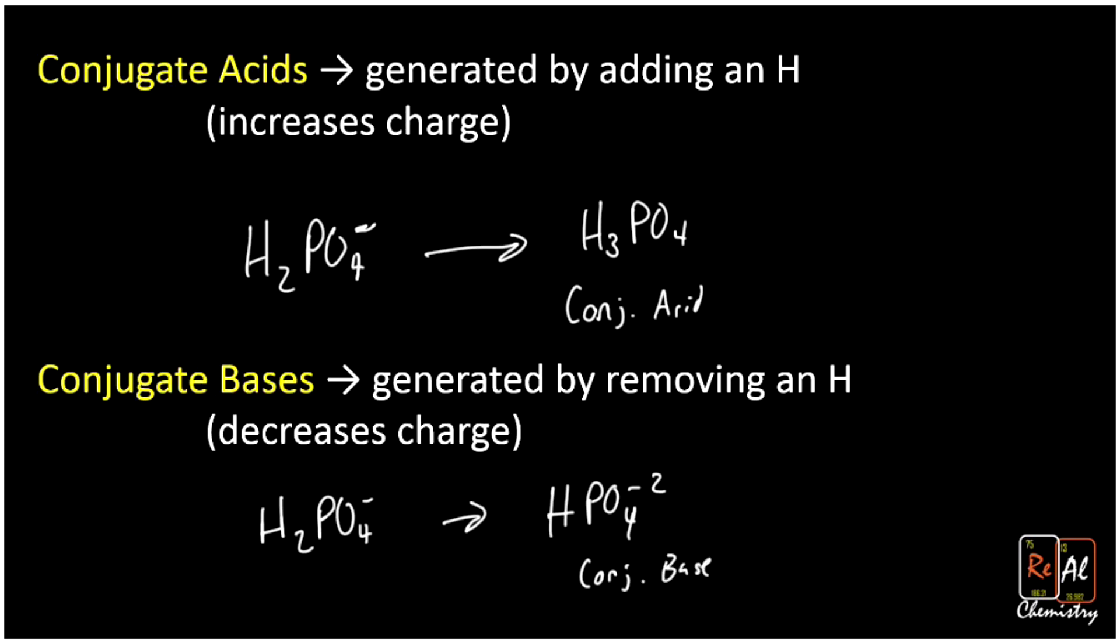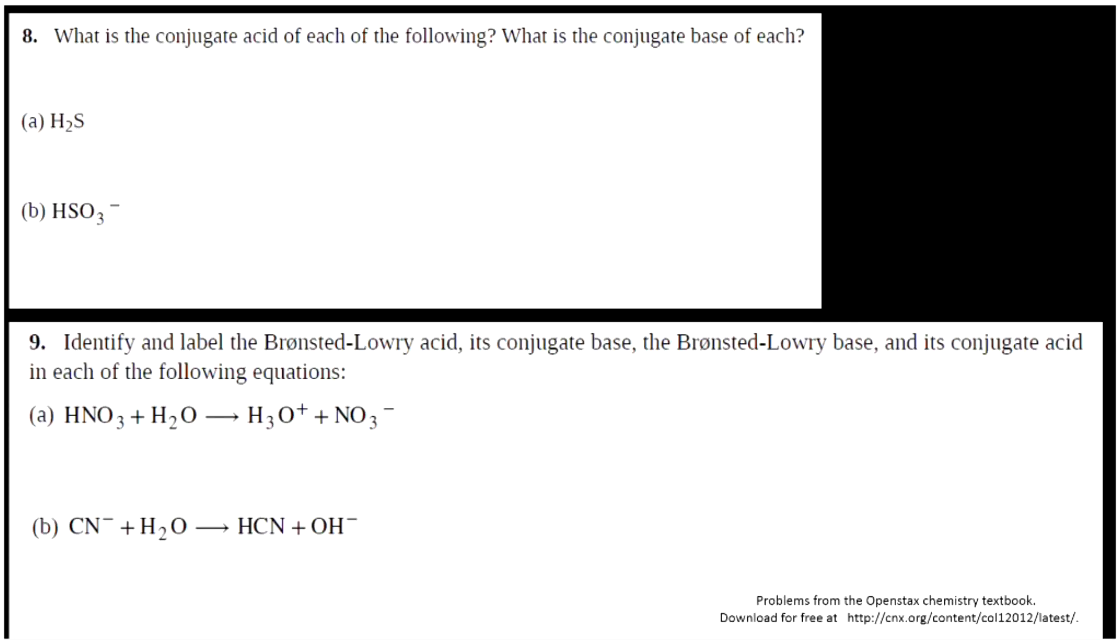Let's do a few practice problems with conjugate bases and acids in our Bronsted-Lowry acid definitions. So these are both from the OpenStax textbook. Problem eight says, what is the conjugate acid of each of the following? What's the conjugate base? Well, to generate the conjugate acid, remember that we add a hydrogen. So that would be H3S+. It becomes positive because it gained a proton. So that's the conjugate acid.